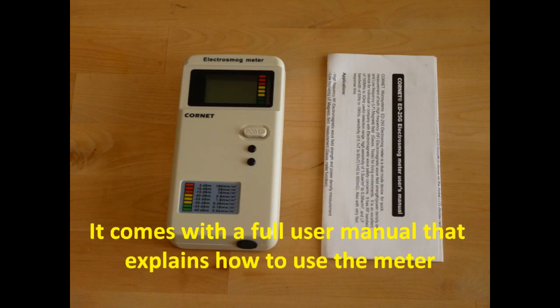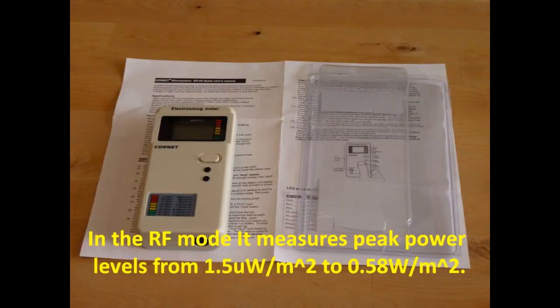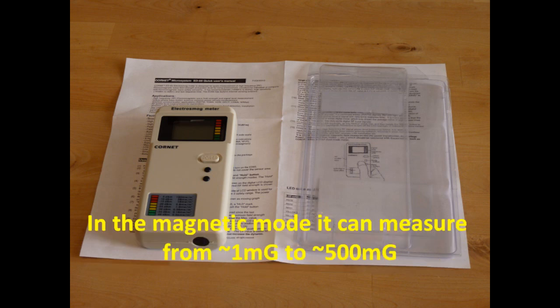It comes with a full user manual that explains how to use the meter. In the RF mode it measures peak power levels from 1.5 milliwatts per square meter to 0.58 watts per square meter. In the Magnetic mode it can measure from 1 milligauss to 500 milligauss.